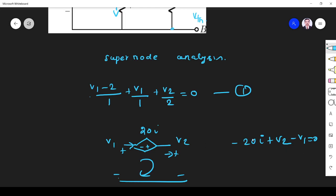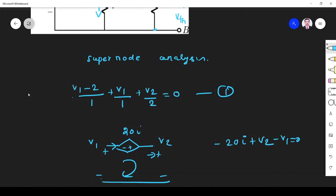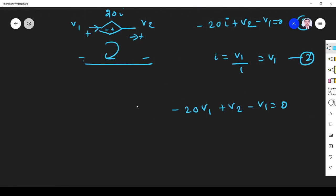What is i? i is current flowing through this 1 ohm branch, so I can write i = V1/1 = V1. This is equation number 3. Substitute equation 2 in 3, so it will become -20V1 + V2 - V1 = 0. This indicates 21V1 = V2. This is equation number 4.